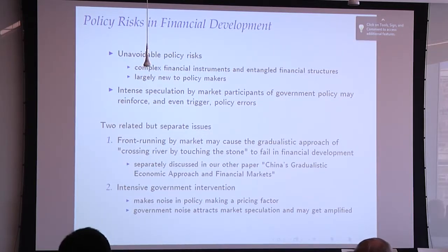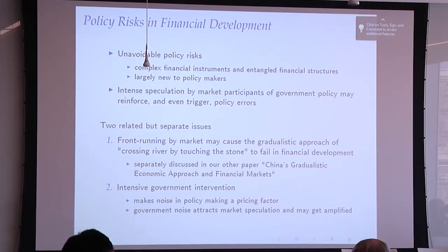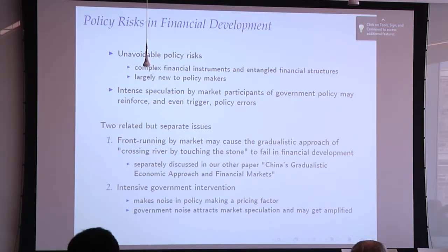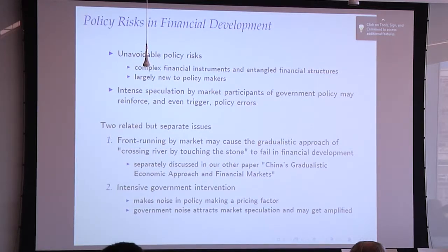I want to highlight two issues in verbal terms without too much technical detail. One is the so-called gradualism approach — China is famous for 'crossing the river by touching the stone.' This is a philosophy of gradually modifying policy, where the government watches the economy's response to an initial policy change and then gradually modifies policy over time to find optimal choices. This worked well during the past 35 years and has been used to develop the financial system.